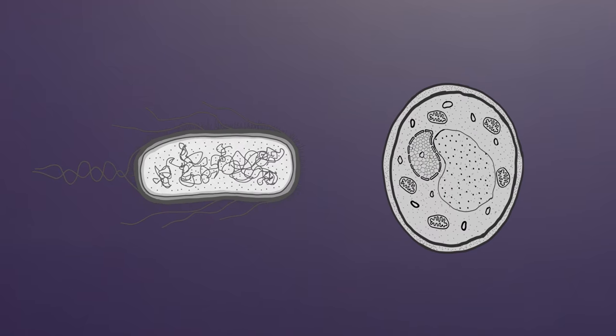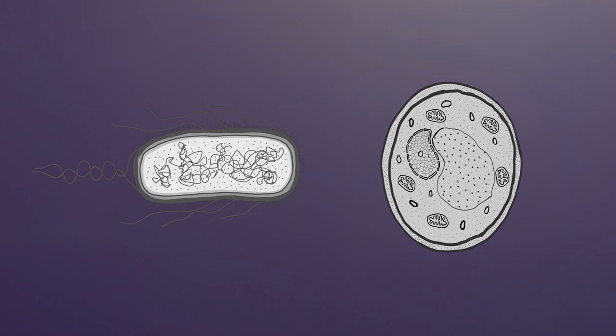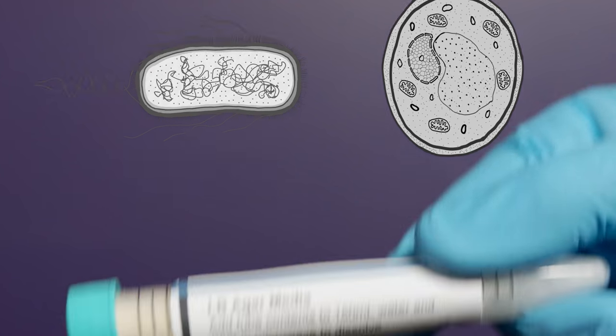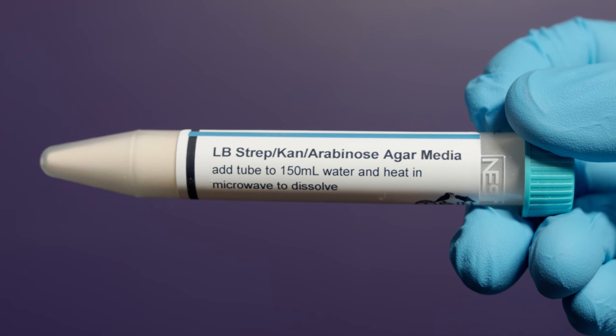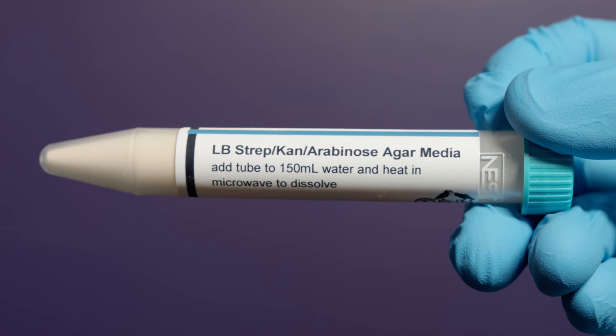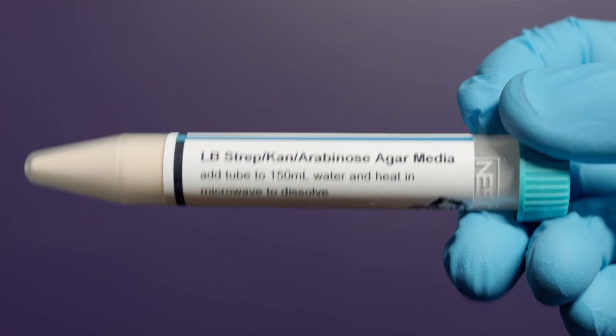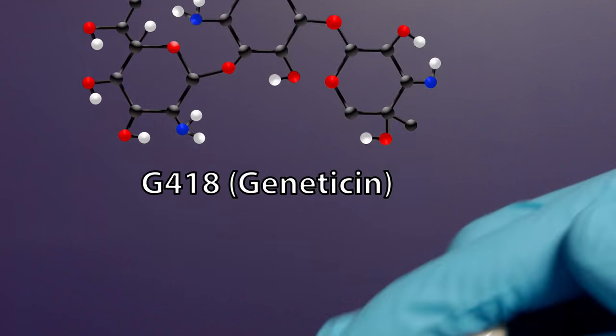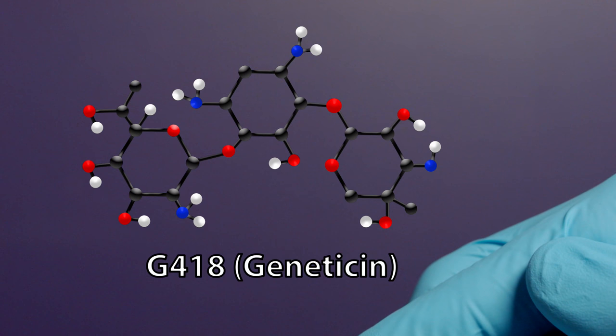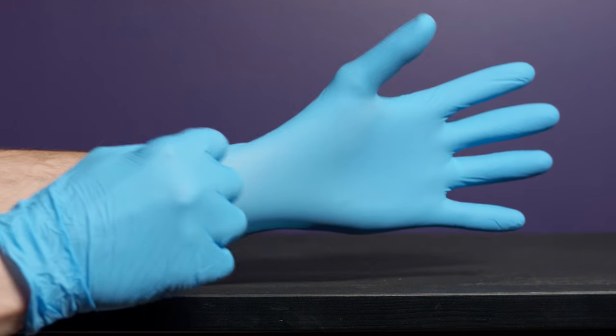The yeast and E. coli are going to need a medium to grow on and food to eat, so the first step is making LB agar plates for the E. coli and YPD agar plates for the yeast. We will make LB strep-kan agar plates for the modified E. coli, which contains the antibiotics streptomycin and kanamycin, and YPD agar with G418 or Geneticin, another antibiotic, which will ensure that only the yeast with the GFP survive. But first, wear gloves.